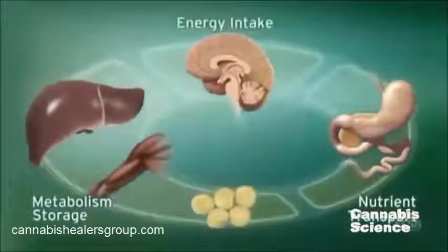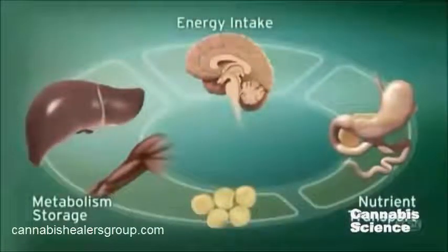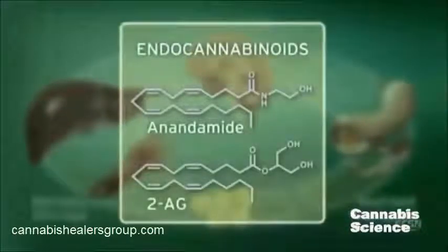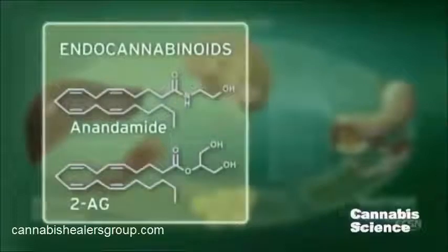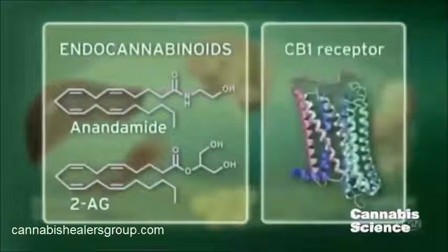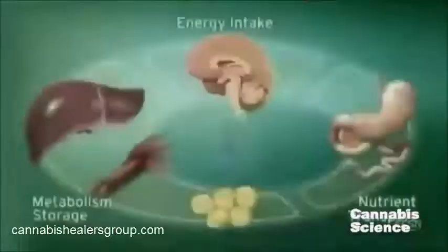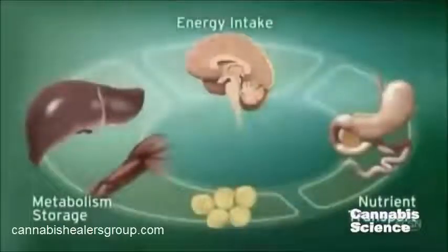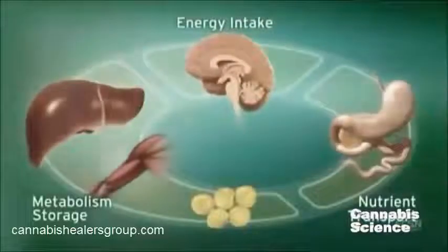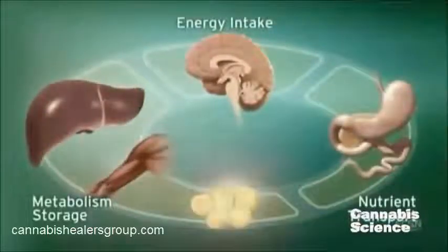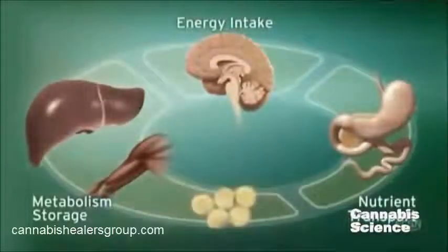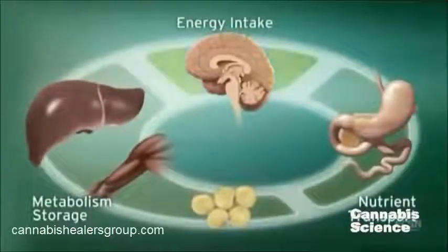The ECS regulates these processes through endogenous ligands such as anandamide and 2-arachidonylglycerol, and the CB1 receptor. CB1 receptors are located in the brain, digestive tract, muscle, and adipose tissue. Integration of these central and peripheral ECS components is achieved through neuronal and hormonal signaling.